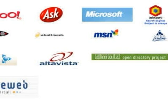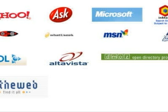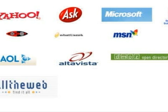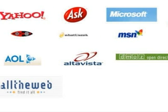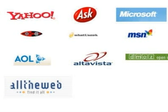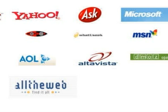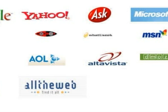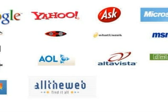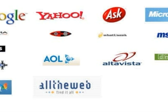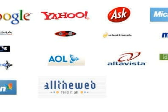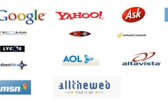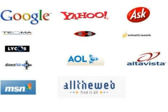Data about web pages are stored in an indexed database for later use. Some search engines such as Google store all or part of the source page as well as information about the web pages, whereas others such as Yahoo store every word of every page they find.